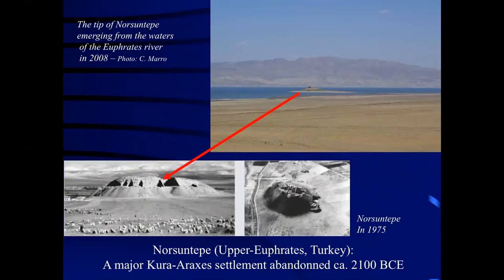And indeed, if we look at the evidence from Norshuntepe, we have this enormous site with Kura-Araxes occupations that lasted until the very end of the third millennium. It's a major Kura-Araxes settlement with both monumental buildings and domestic houses. In particular, the monumental buildings started to be built a bit before a collapse is perceptible in the South Caucasus — around 2600 — and three successive occupation periods with an extensive settlement area are illustrated between 2600 and 2100.